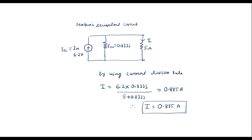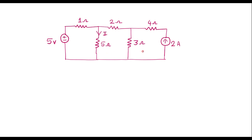Now I will verify the same problem by solving using loop analysis method. This is the same circuit that was given; I will do the verification using loop analysis. This is not strictly necessary, but just for understanding purposes I am doing this. This is the actual given circuit; I will find current I using loop analysis and verify whether I get the same result.